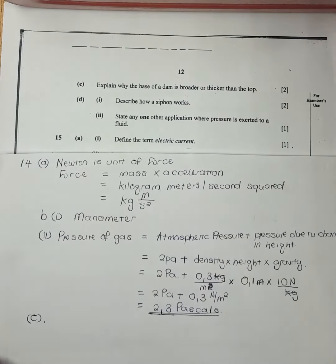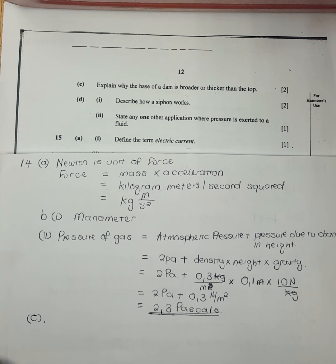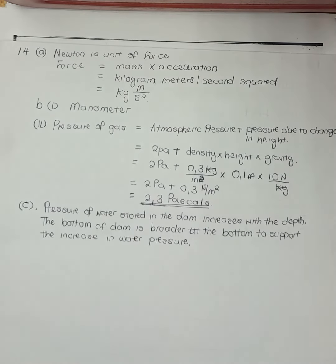Part c: explain why the base of a dam is broader or thicker than the top. The pressure of water stored in the dam increases with depth. Therefore, the bottom of the dam is made broader to support the increased water pressure at greater depths.